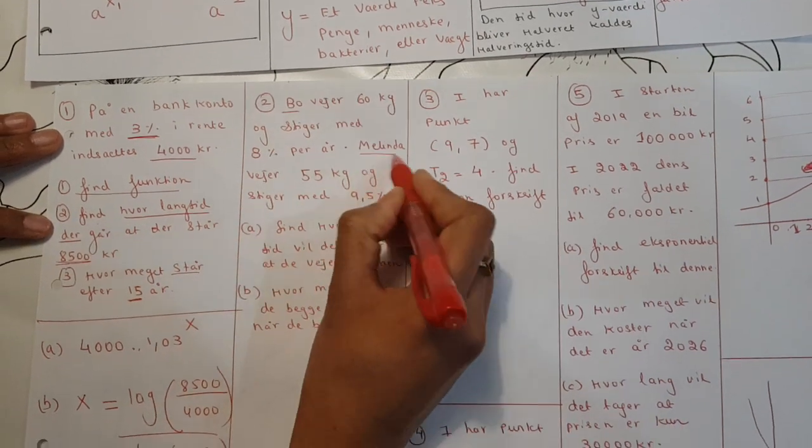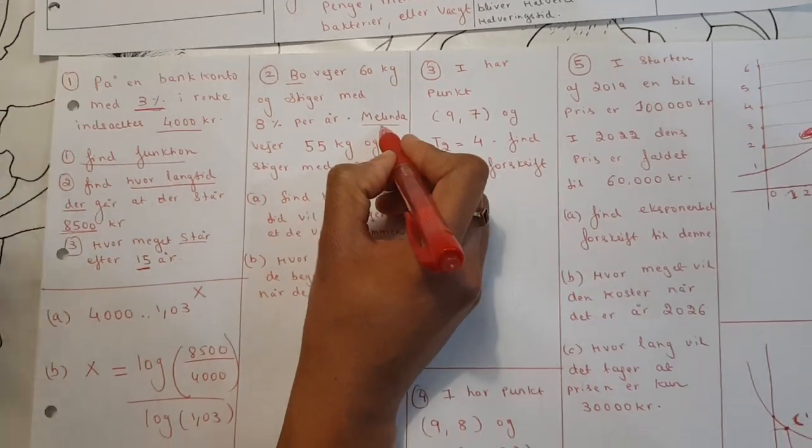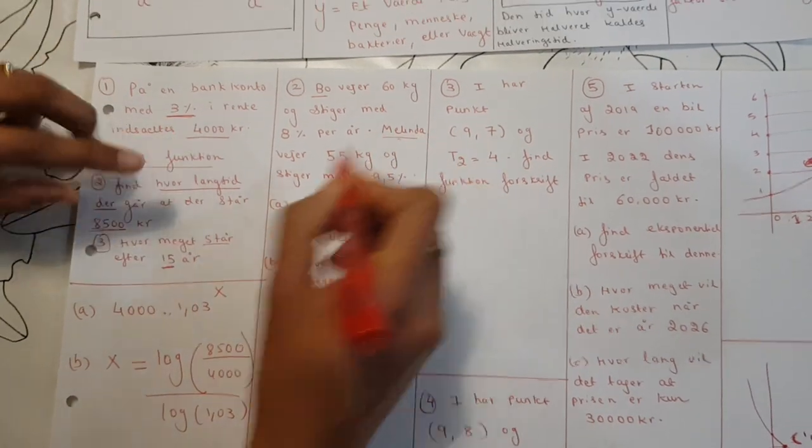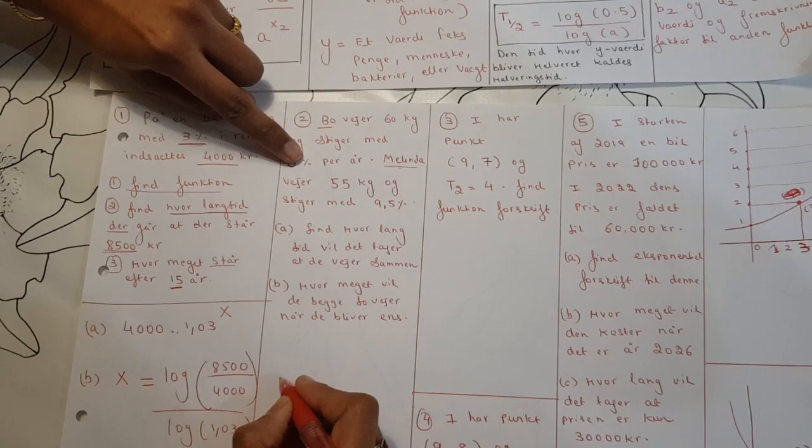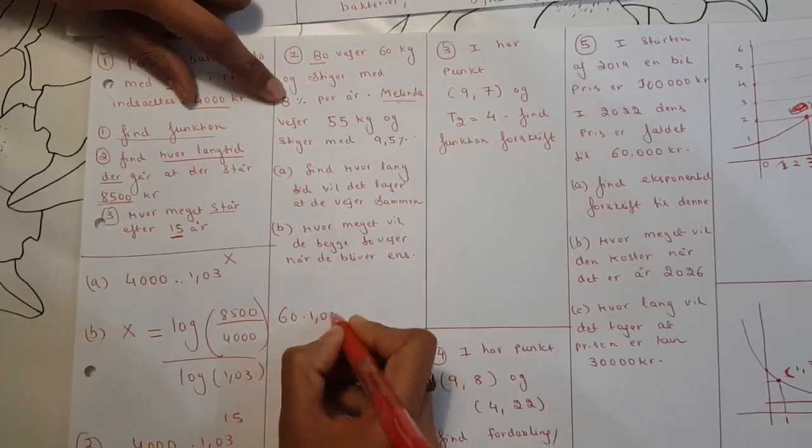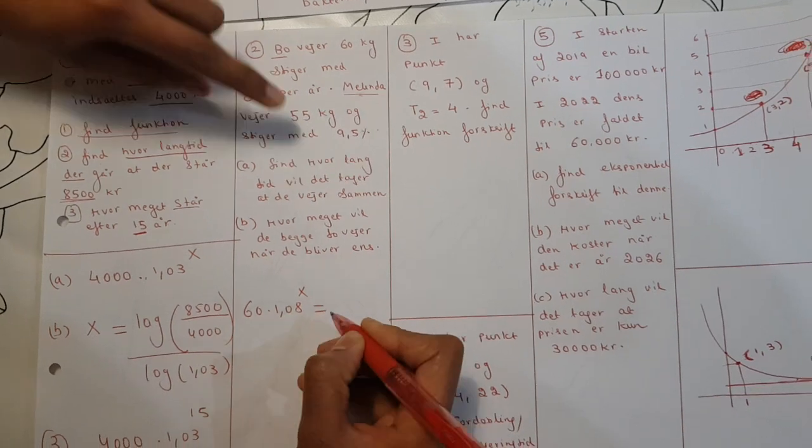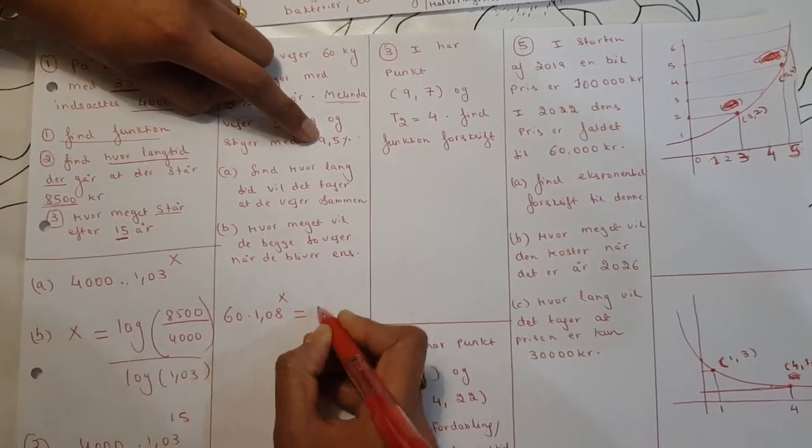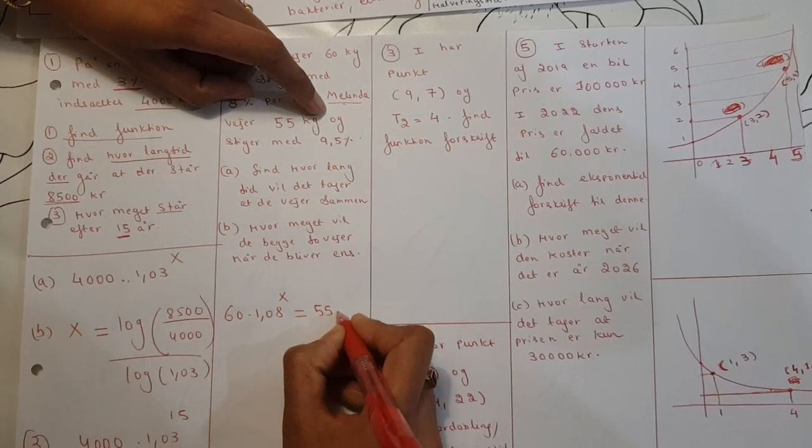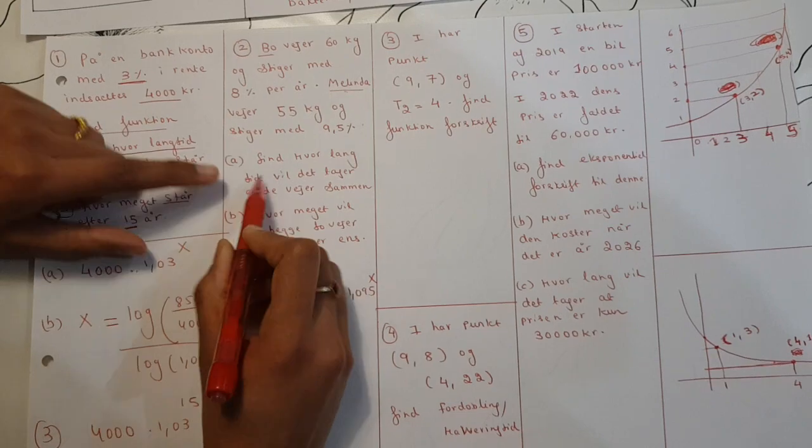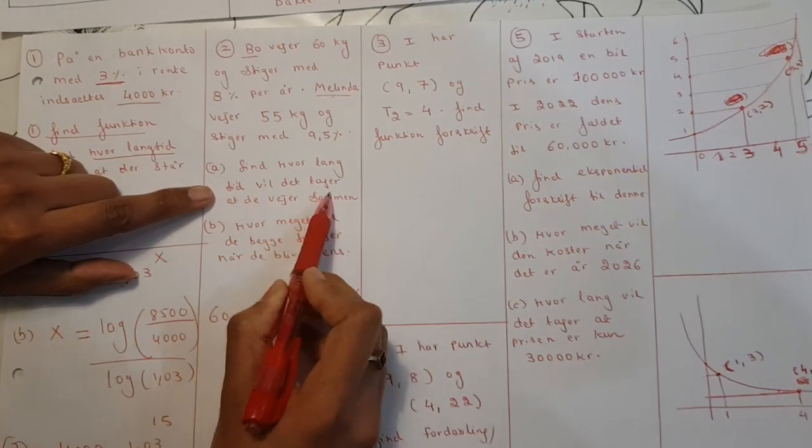Here's the function, f(x) equals x. Number two, here you have it is not two different functions. The first function is we have 60 kilos and it grows at 8%, that means the function is 60 times 1.08 to the power of x. Or we have 55 kilos and it grows at 9.5%, so 55 times 1.095 to the power of x. First, find how long until they're equal.